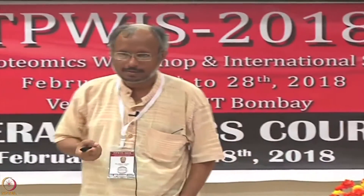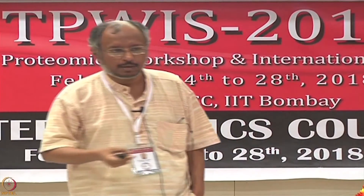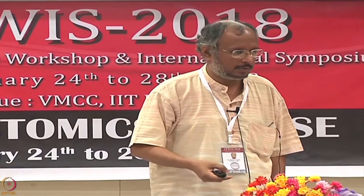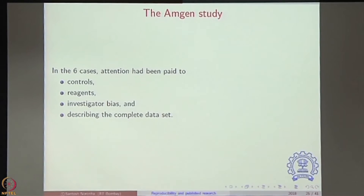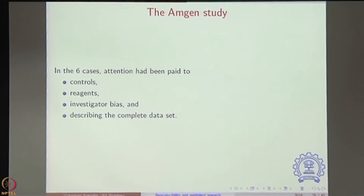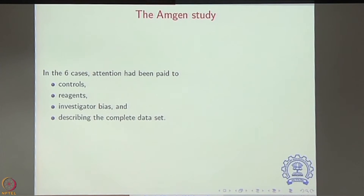Out of 53 papers, they could reproduce only 6 — and this is MIT, Caltech, Stanford. It is not that people at these top labs were deliberately cheating, but results coming out of even top labs cannot be reproduced. In the 6 cases where results could be reproduced, attention had been paid to doing the right controls in the experiment. The reagents were reproducible — reagents, especially in the immunology space, are hard to obtain in a reproducible fashion; antibodies in particular have batch-to-batch variation. In the 6 cases there was the ability to manufacture reagents reproducibly, and that made a huge difference.